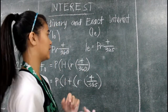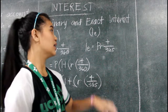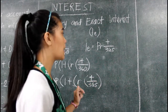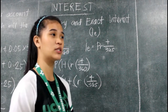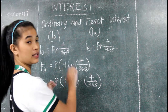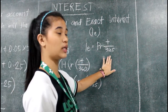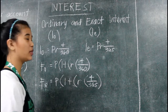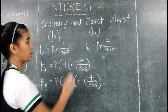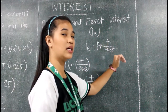Now we are in ordinary and exact interest. Ordinary and exact interest is still under simple interest. The difference is that in ordinary and exact, the term of the loan is specified in number of days, while in simple interest it is specified in years — though the final answer should always be in years. In ordinary interest, the number of days is always 360. In exact interest, the number of days is always 365. The formula for ordinary interest is P times R times T over 360, and for exact interest it is P times R times T over 365.